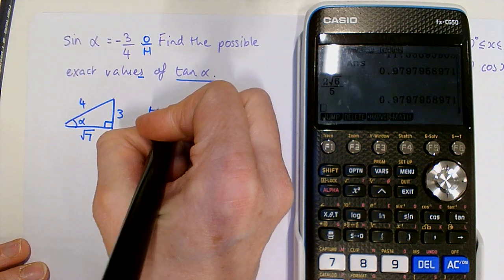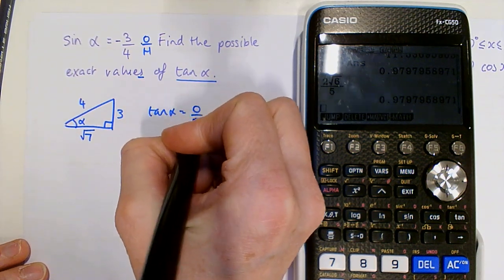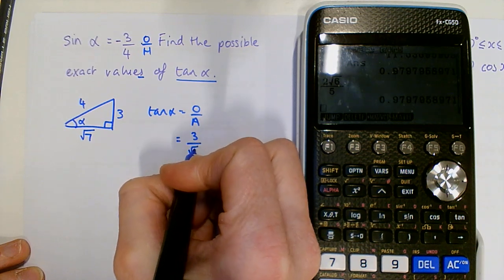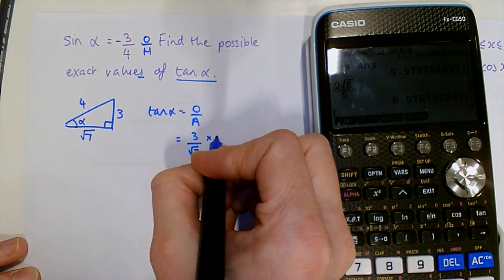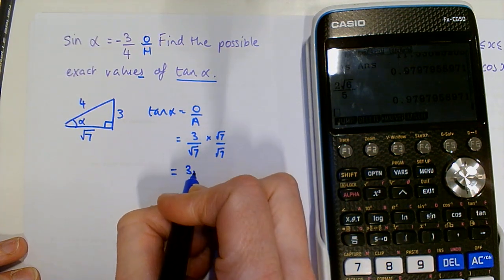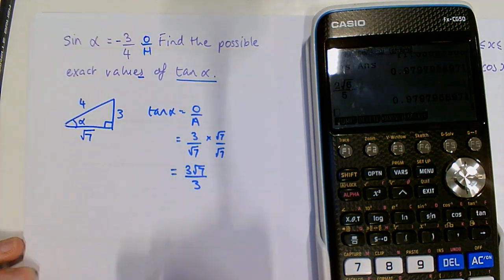So we know that tan is opposite over adjacent. So that would be 3 over root 7. But we want to rationalize that denominator. So we times by root 7 over root 7. So we get 3 root 7 over 7.